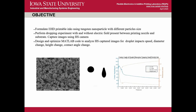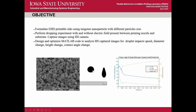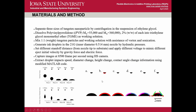The objectives are: first, we formulate E-jet printable inks that can be formulated and used in the E-jet printing process; second, perform droplet experiments with and without an electric field present between the printing nozzle and substrate; third, capture images using high-speed cameras; and fourth, design and optimize MATLAB code to analyze high-speed captured images for droplet impact speed, diameter change, height change, and contact angle changes.